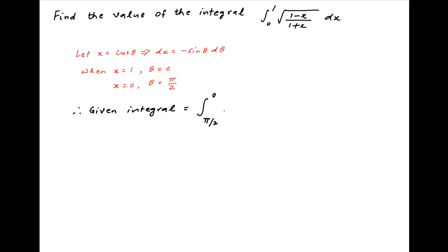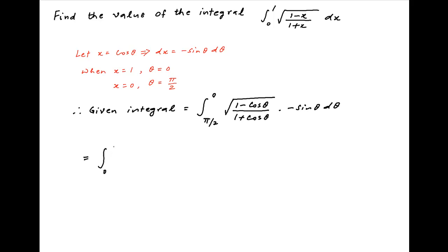The integral becomes: from π/2 to 0 of √((1 - cos θ)/(1 + cos θ)) times (-sin θ) dθ. The minus sign in the integrand can be used to reverse the limits, which now go from 0 to π/2.